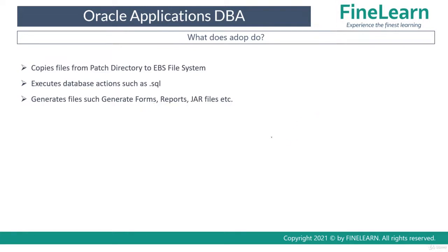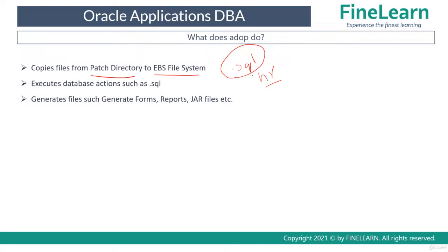The responsibility of ADOP is to first copy files from the patch directory to the EBS file system. When you download a patch, its main purpose is to bring new features or fix existing bugs. To achieve this, new files come along with the patch, and these files are copied from the patch top — the location where your patch resides — to the EBS file system. For example, a dot SQL file related to the HR product will be copied from the patch directory to the EBS file system by ADOP.